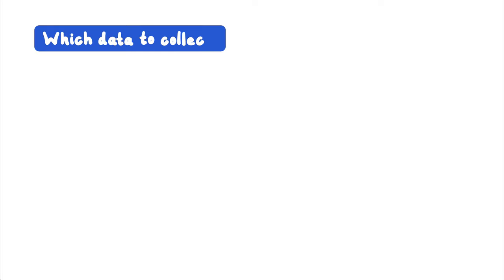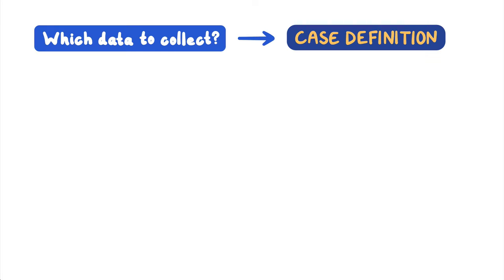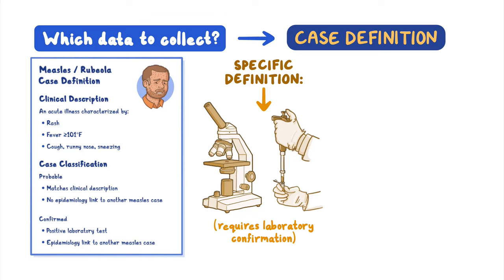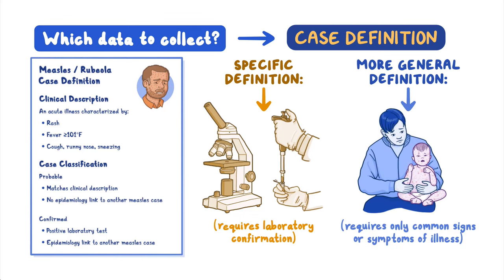Determining which data to collect starts with addressing case definitions. Case definitions are used in both surveillance and in outbreak investigations. A case definition is developed for each disease that health experts want to monitor. It provides a set of criteria to define when an instance of disease should be counted as a case. Some case definitions require laboratory confirmation to ensure that the person has that disease and not something similar. Other case definitions may be written more generally, requiring only that the illness matches a description of common signs or symptoms. Case definitions for many reportable diseases are standardized so that data collected in different places can be compared.